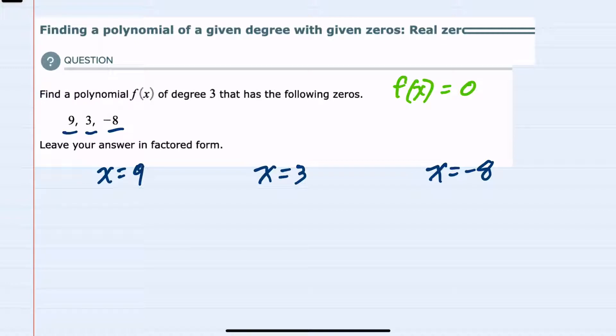So for example with the first one if I subtracted that 9 from both sides I would be left with x minus 9 equals 0. And this would give me one of my factors here as x minus 9.